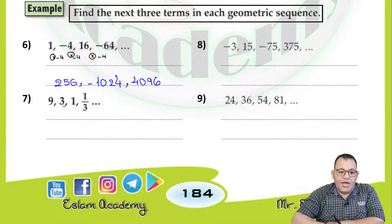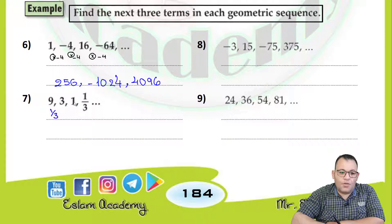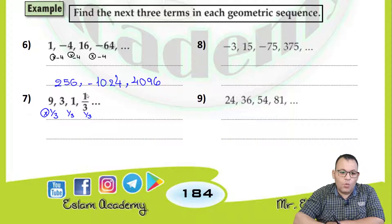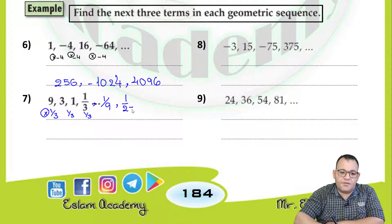The next sequence is 9, 3, 1, and 1 over 3. Dividing: 3 divided by 9 equals 1 over 3, 1 divided by 3 equals 1 over 3, and 1 over 3 divided by 1 equals 1 over 3. Each time we multiply by 1 over 3. The next three terms are: 1 over 3 times 1 over 3 equals 1 over 9, times 1 over 3 equals 1 over 27, times 1 over 3 equals 1 over 81.